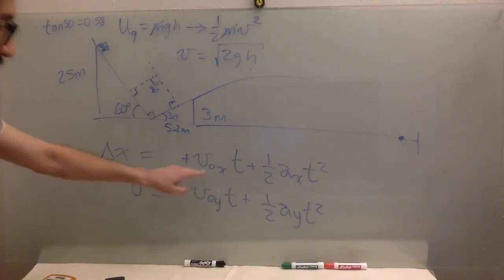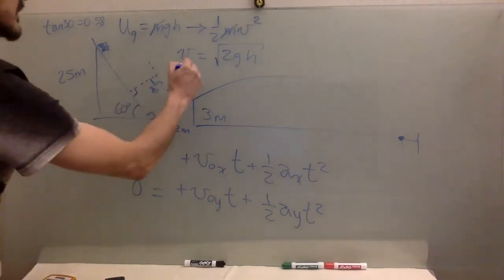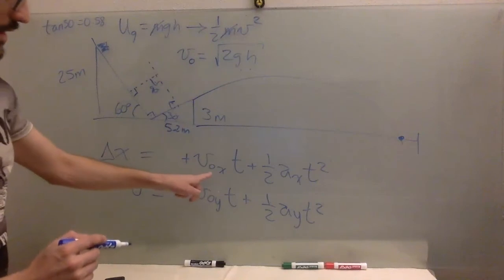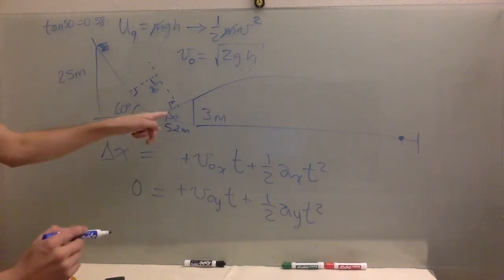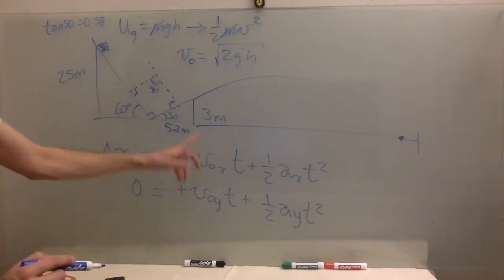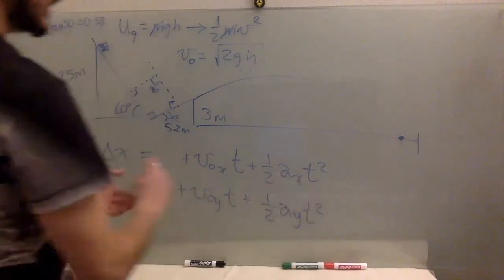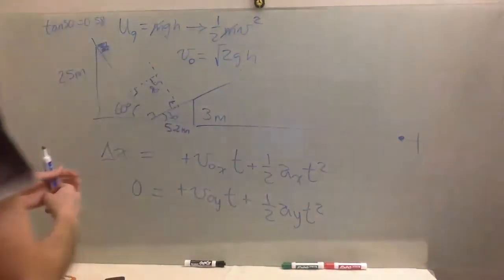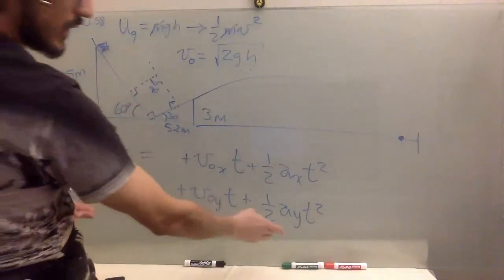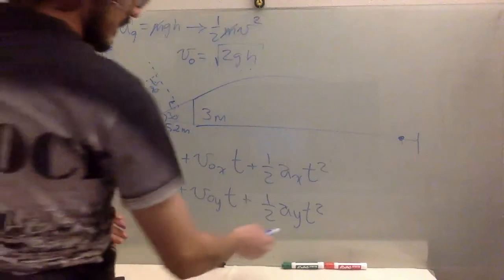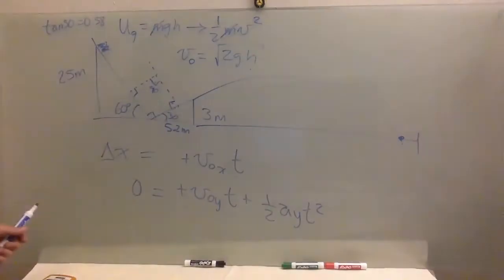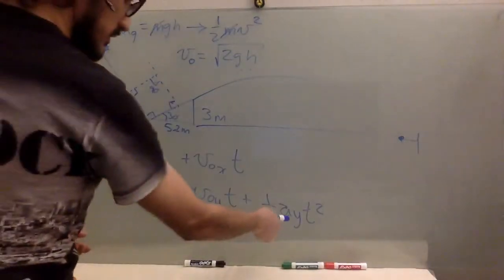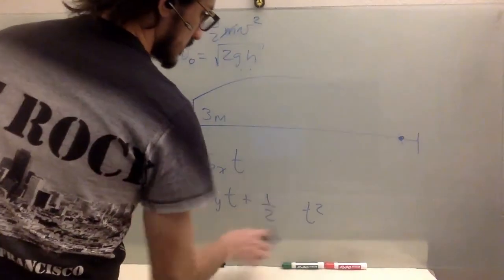These are the components, component of the initial velocity that we got over here. So to get the x component, you multiply times cosine 30, or times sine 30, to get the y. We do not have an acceleration in the horizontal axis, right? So the velocity is constant in x. In y, we do have an acceleration, is gravity. So we can get rid of this one over here. And this acceleration in y, we can just change it to g. Very well.